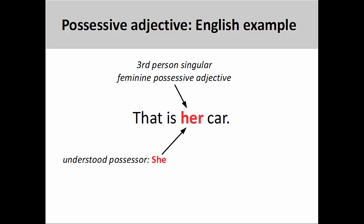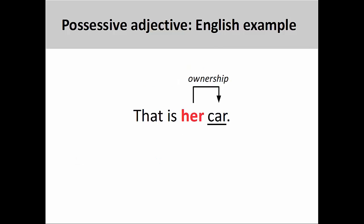In English, a possessive adjective shows ownership of something or a relationship between things. The possessive adjective must agree with the number, person, and, when applicable, gender of the possessor. For example, in the sentence you see on the screen, 'her' is a third-person singular feminine possessive adjective that agrees with an understood person owning the car — she, a third-person singular personal pronoun. Another important point is that possessive adjectives must be placed before the thing that is being possessed. In this sentence, 'her' comes before 'car,' indicating ownership of the vehicle.